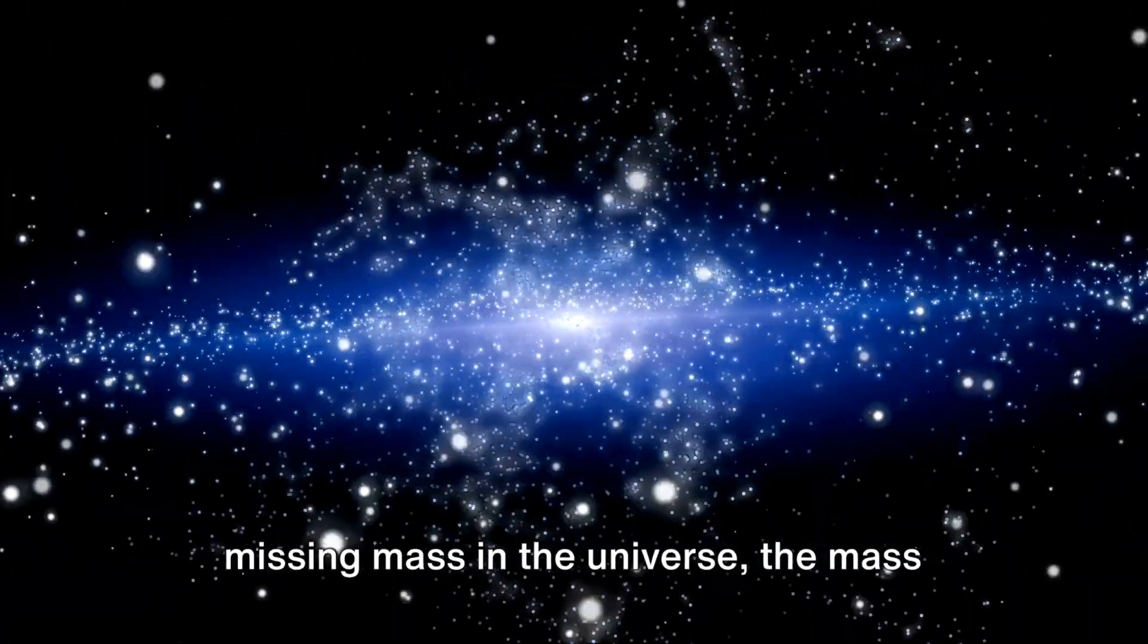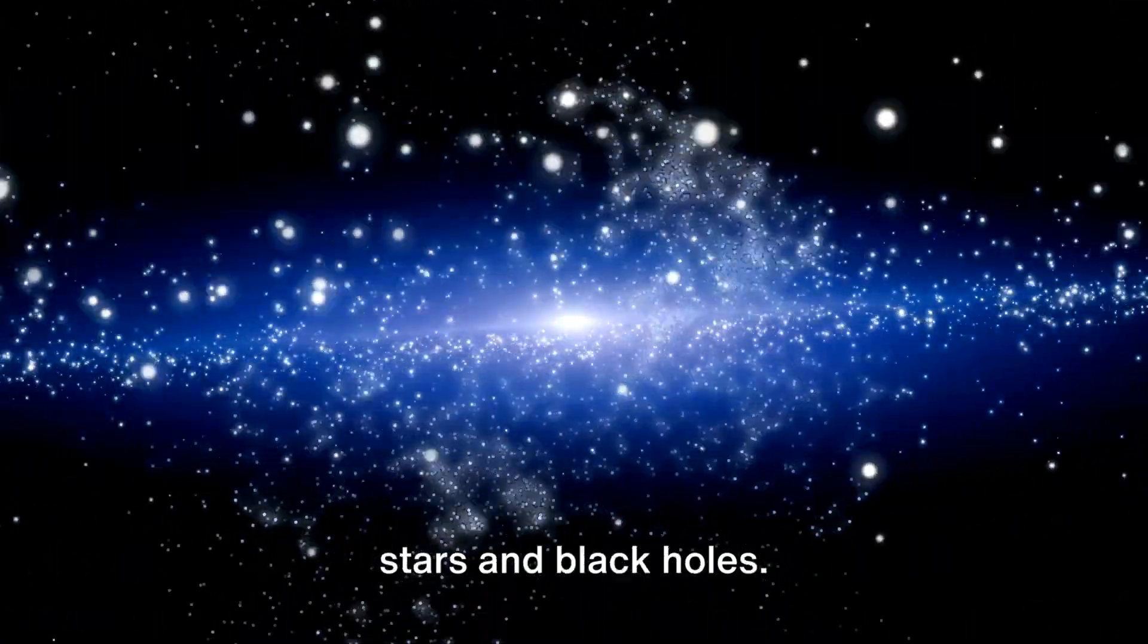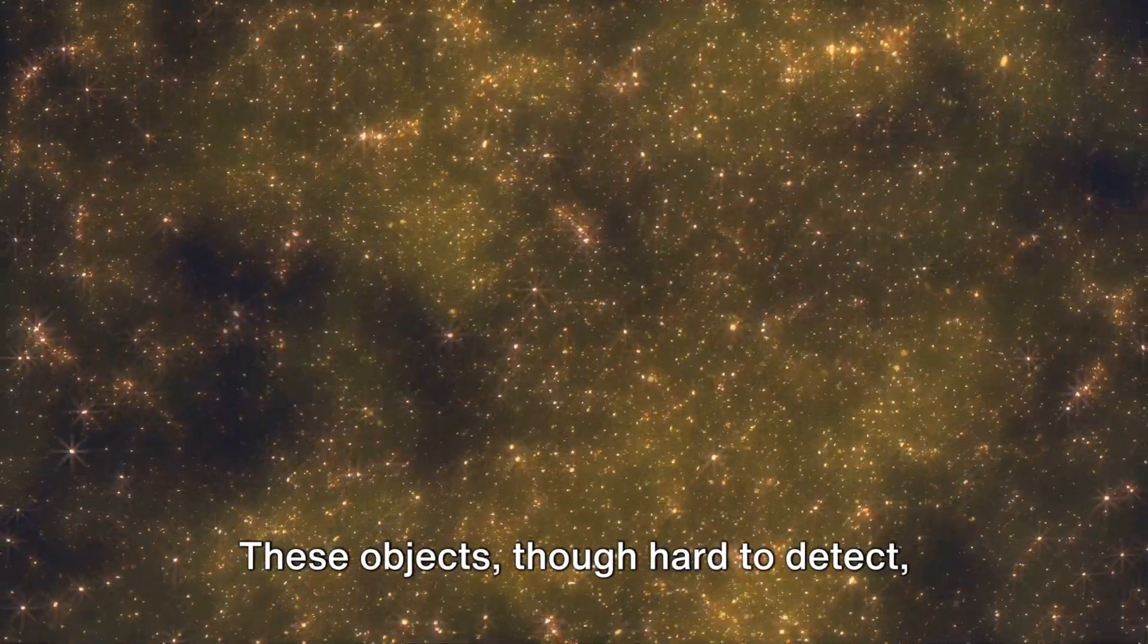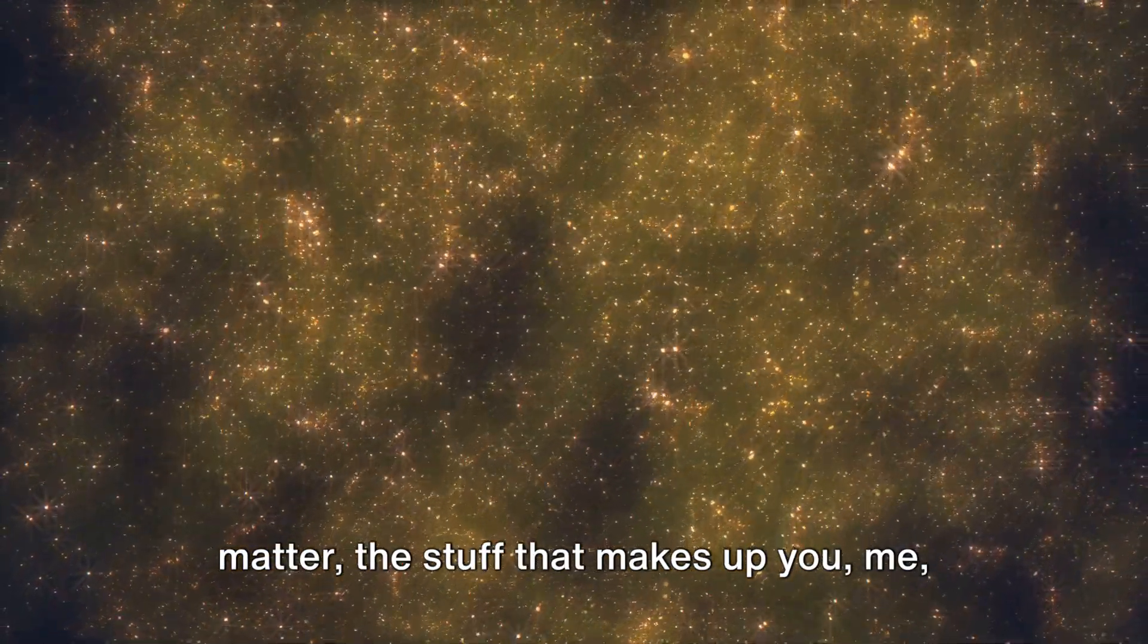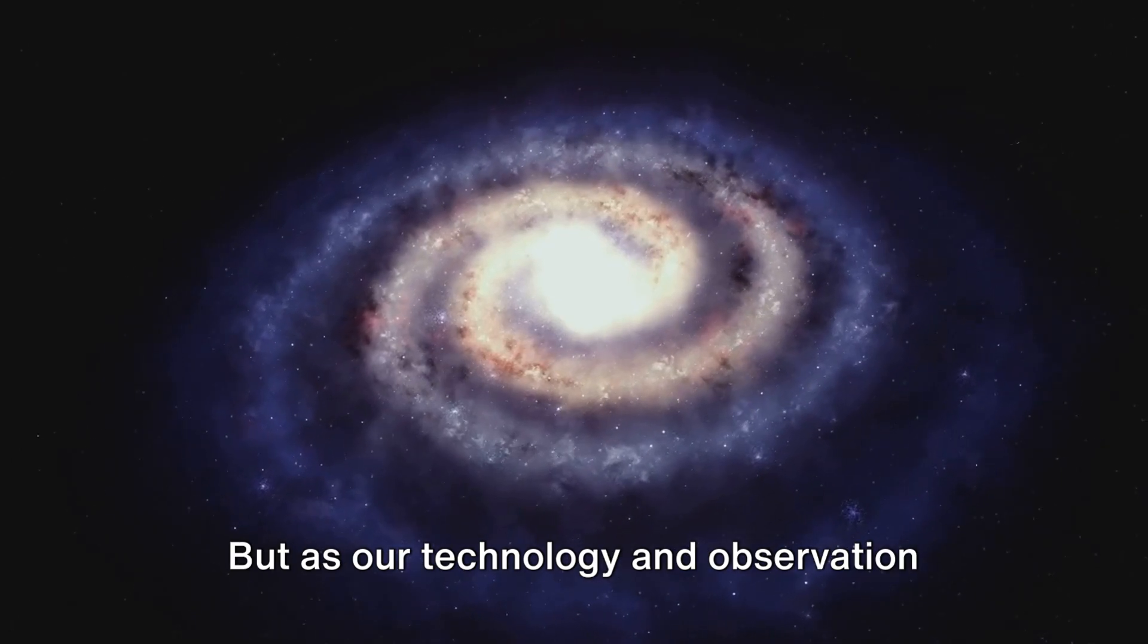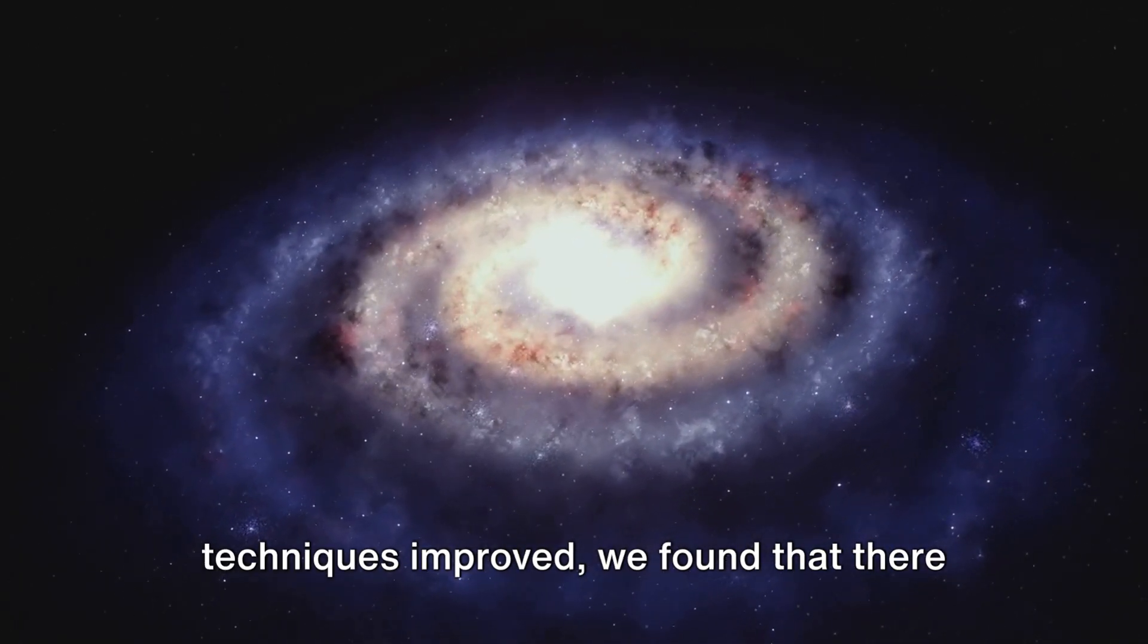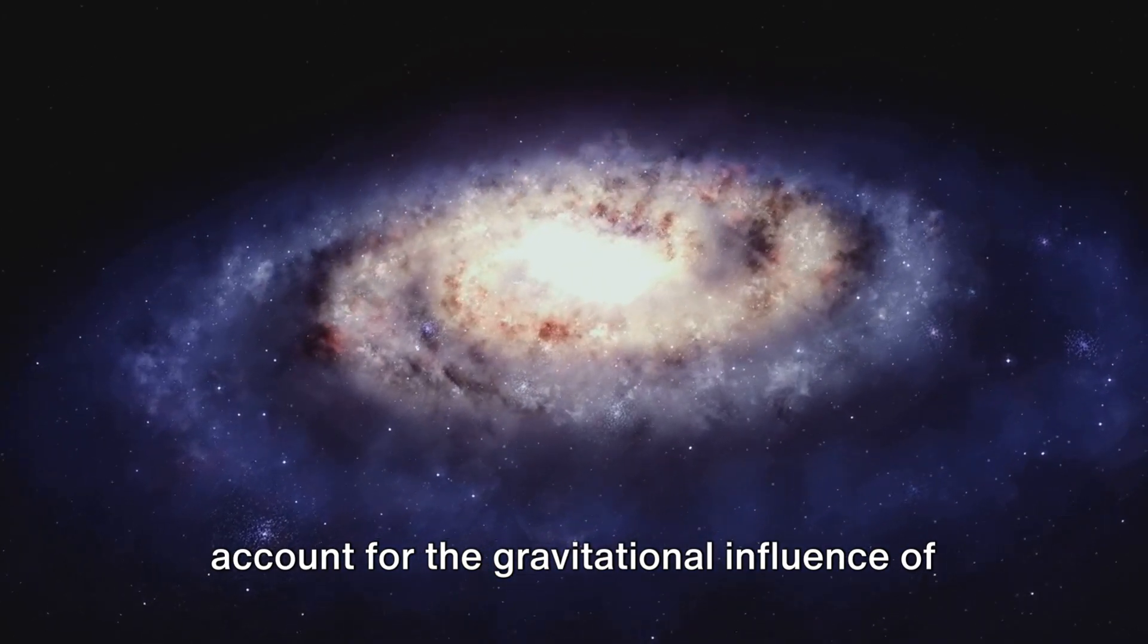Early theories speculated that the missing mass in the universe, the mass that we couldn't see, was made up of faint stars and black holes. These objects, though hard to detect, would have been composed of baryonic matter, the stuff that makes up you, me and everything we can touch and see. But as our technology and observation techniques improved, we found that there simply weren't enough of these objects to account for the gravitational influence of dark matter.